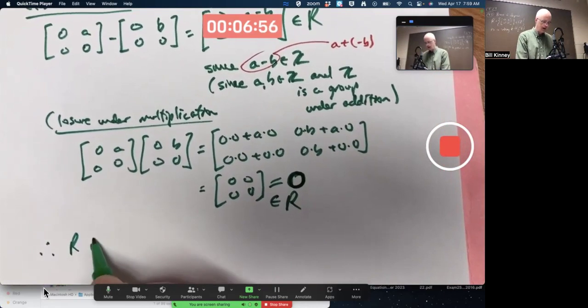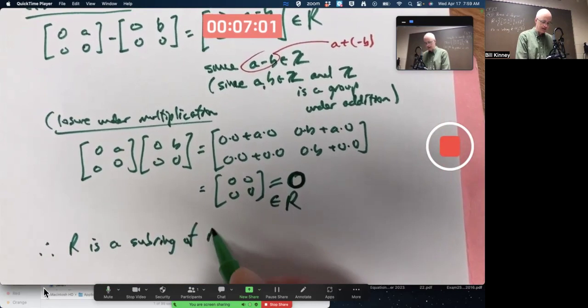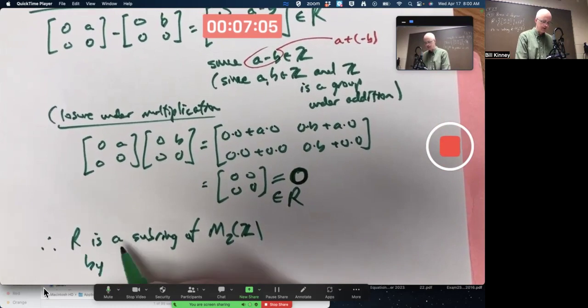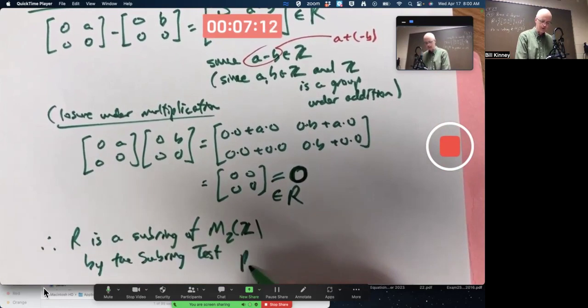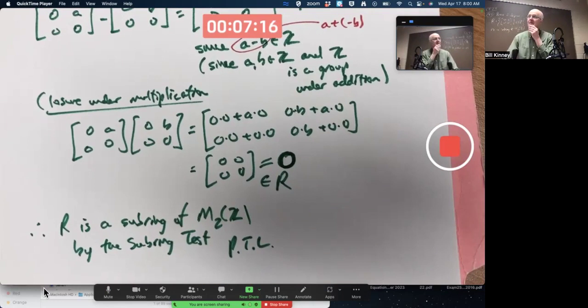Therefore, R is a subring of the bigger ring, M2Z, by the subring test. We're done. Praise the Lord. Okay?